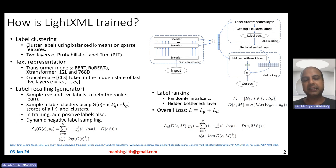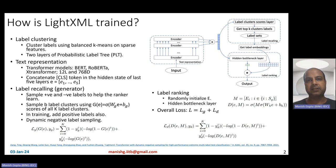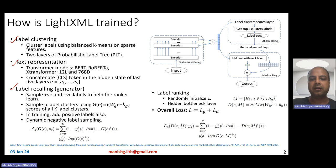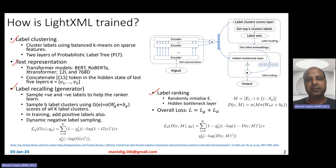Let's get started and understand how LightXML is trained and how its architecture looks. LightXML architecture and training consists of four main parts: label clustering, text representation, label recall, and label ranking. Let's look at them one by one.